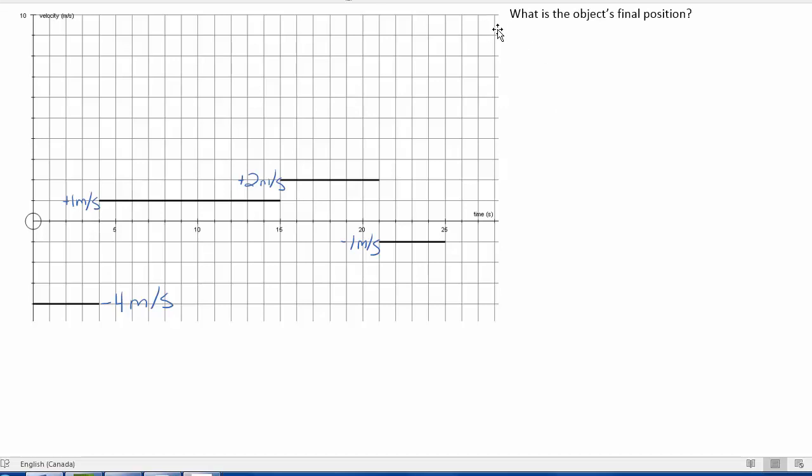So if I want to ask the question, what is the object's final position based on this graph? Now, this is a little bit different than the question shown in class, even though it's the same graph. So in the past, I would have been able to read the position directly off of a position-time graph. I can't do that anymore. But what I can do is use the velocities shown on the screen written in blue and the length of time of each interval to calculate the displacement at each point.